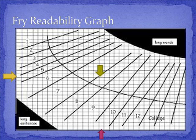How did you do on your own? Did you arrive at the same or about the same reading level score? However, we cannot say that this passage is representative of the textbook nor the chapter. You would need to choose two more passages and get scores for those 100 word samples as well.